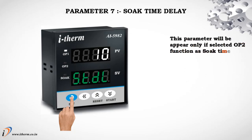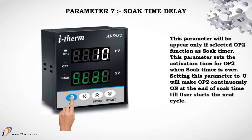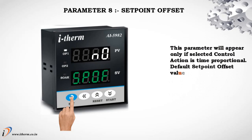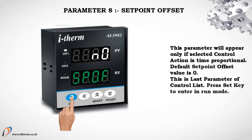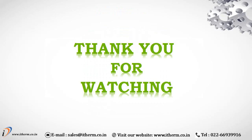Parameter 7: Soak Time Delay. This parameter will appear only if output 2 function is set as Soak Timer. It sets the activation time for output 2 when the Soak Timer is over. Setting this parameter to 0 will make output 2 continuously on at the end of Soak Time until the user starts the next cycle. Parameter 8: Set Point Offset. This parameter will appear only if the selected control action is time proportional. Default set point offset value is 0. This is the last parameter of the control list. Press Set key to enter Run Mode. Thank you.